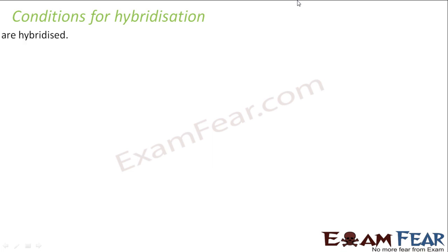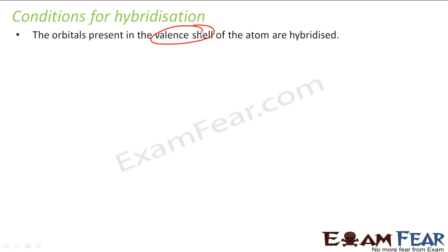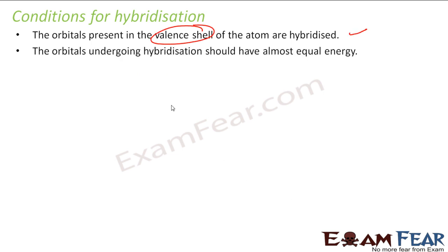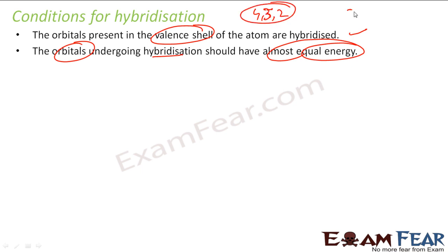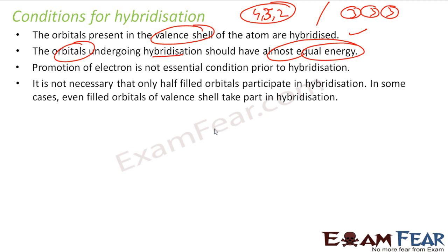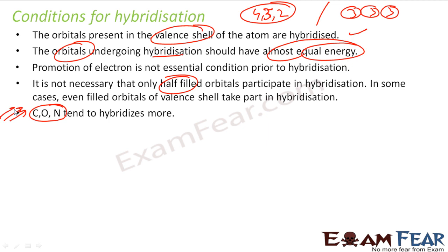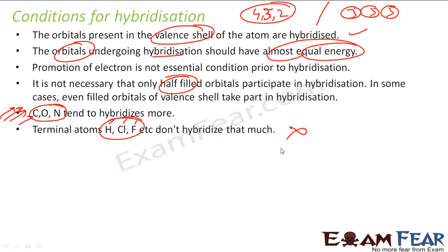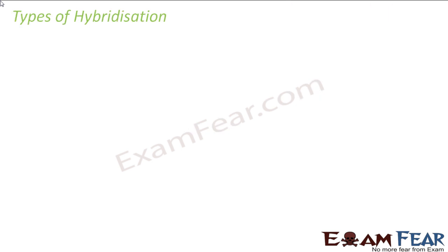Before going further, let's understand the conditions for hybridization. First, only orbitals present in the valence shell take part in hybridization. Second, the orbitals undergoing hybridization should have almost equal energy. Third, promotion of electrons is not mandatory prior to hybridization. Fourth, it is not necessary that only half-filled orbitals take part — even fully filled orbitals can participate. Carbon, nitrogen, and oxygen tend to hybridize the most. Terminal atoms such as hydrogen and chlorine don't hybridize as much.